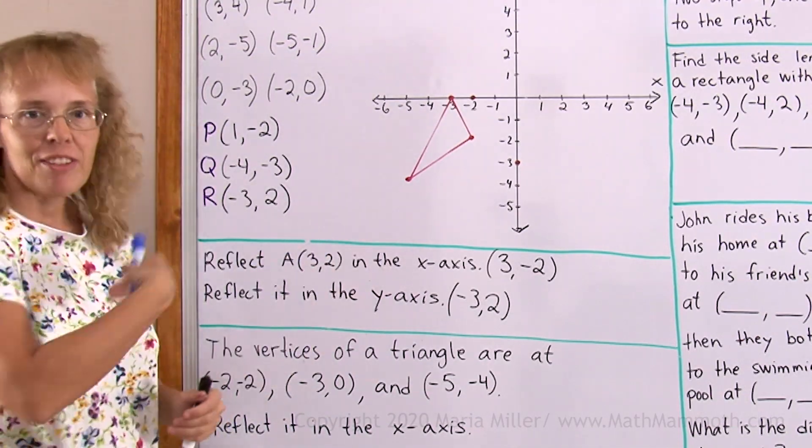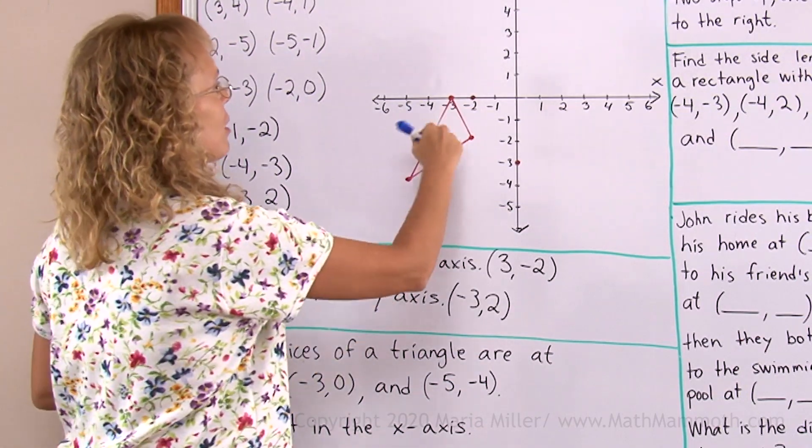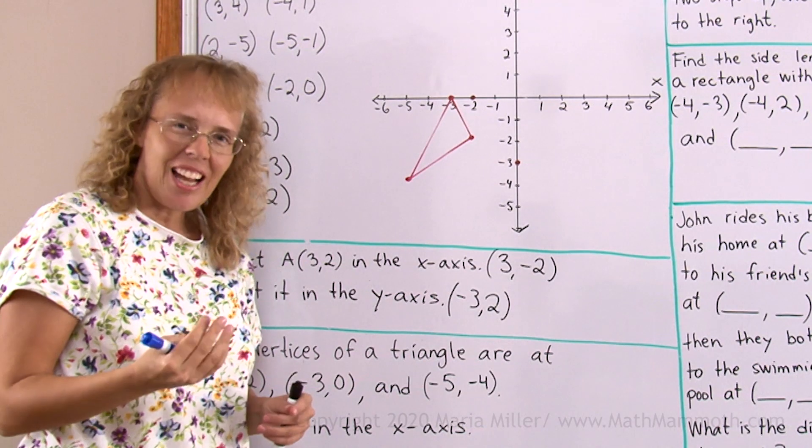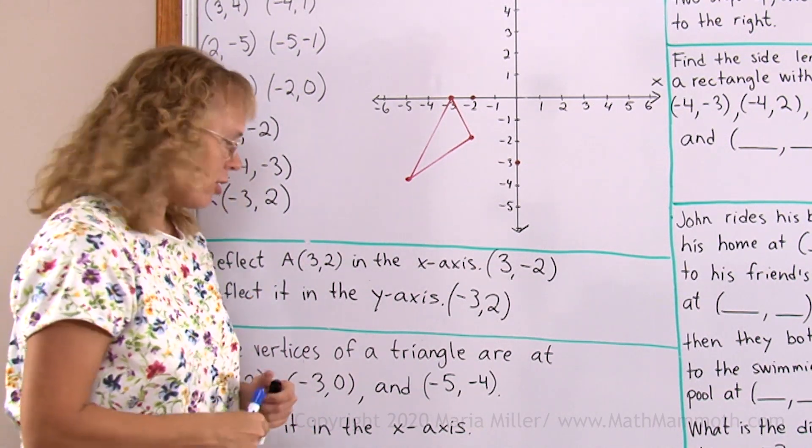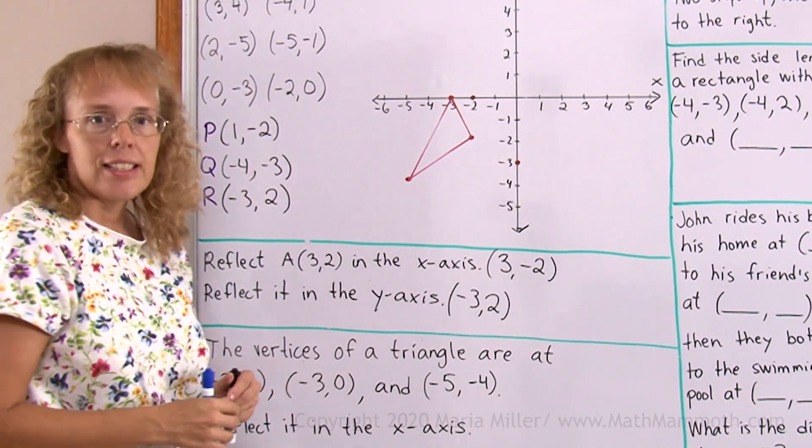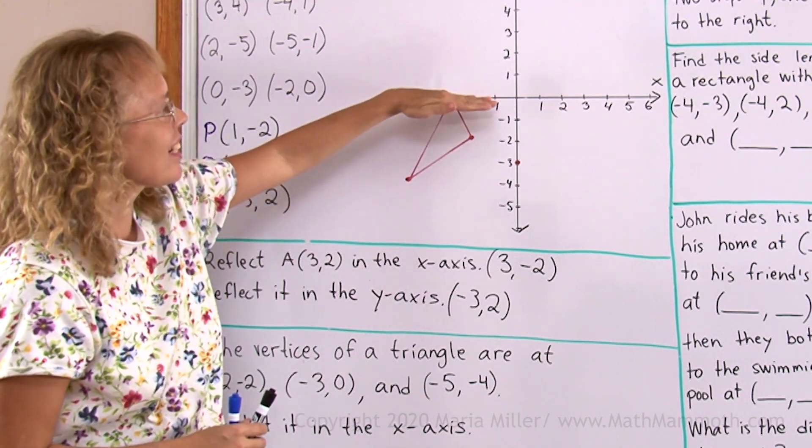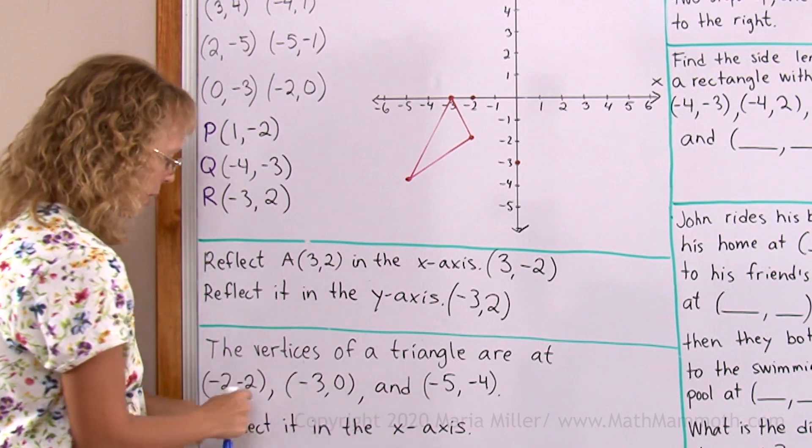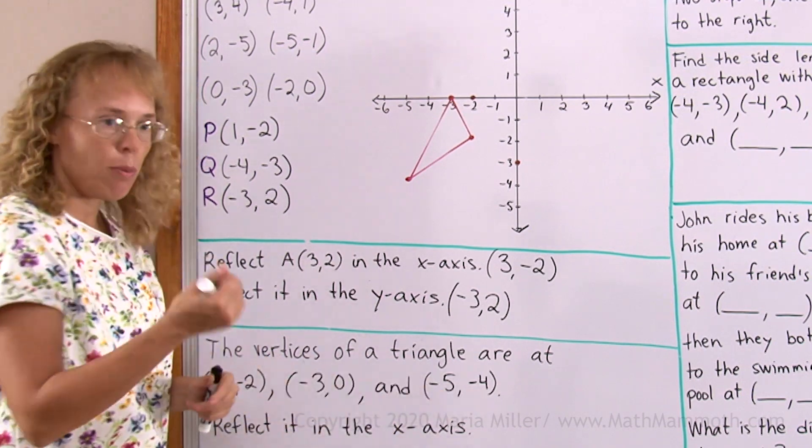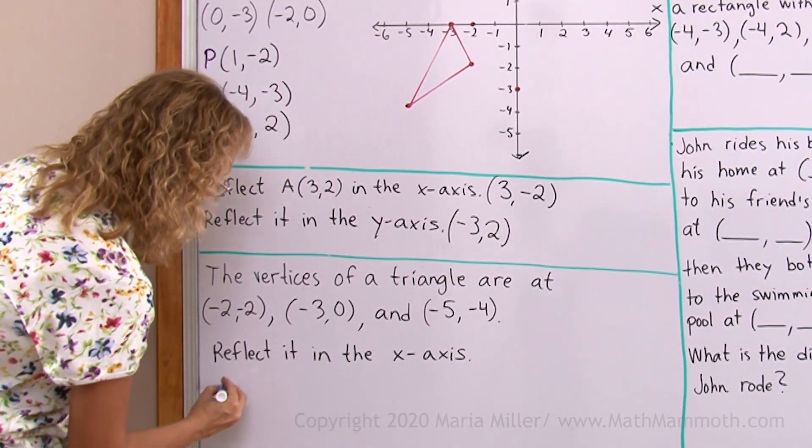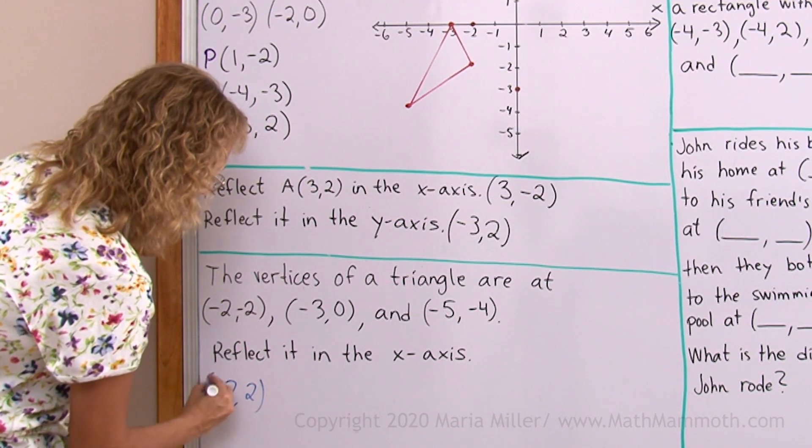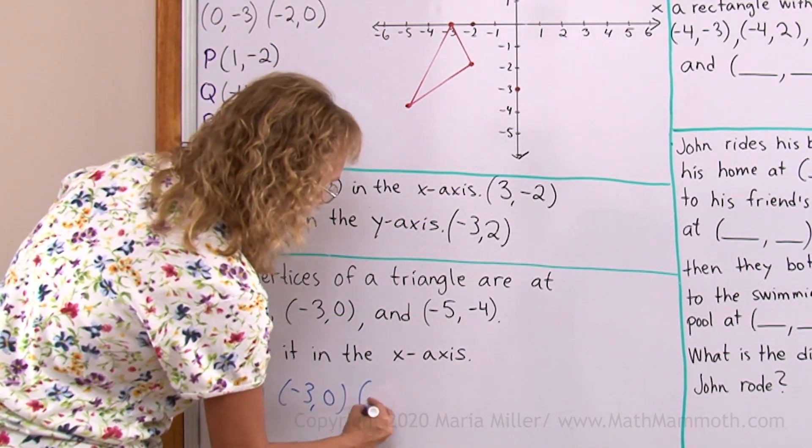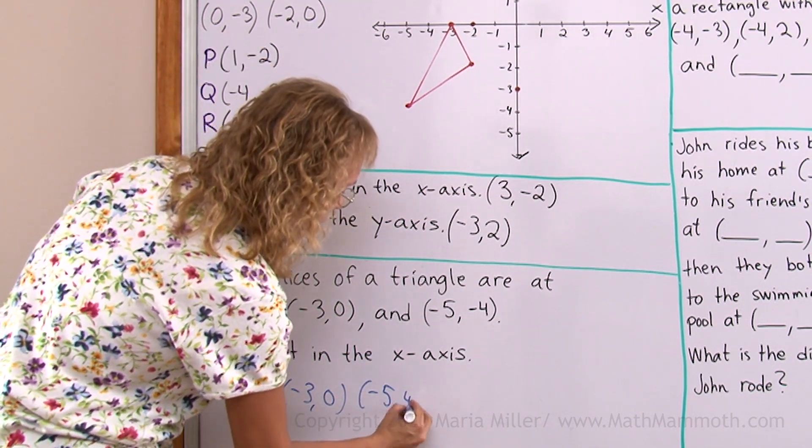Now we're going to reflect it in the x-axis so it will go over here. But before I do anything else let me calculate the new coordinates, the reflected coordinates. When we're reflecting it in the x-axis the x-coordinates don't change. But the y-coordinates will change to the opposites. So we will get (-2,2), and then (-3,0). This does not change. And then (-5,4).